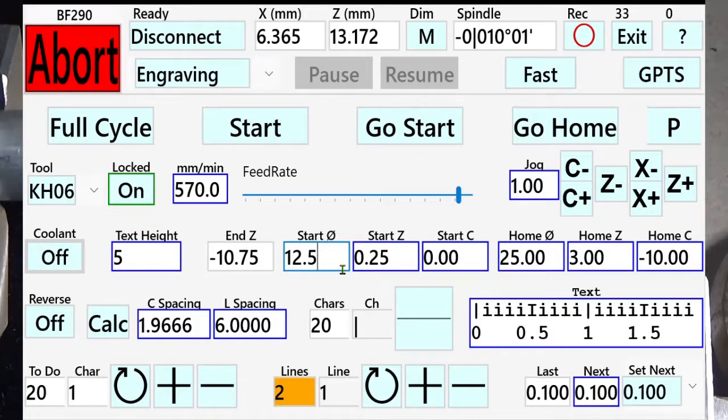And the diameter 0.5. We see an orange background in the lines number, meaning that one of the lines has a problem.